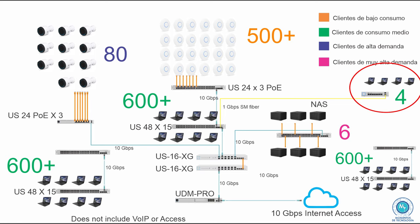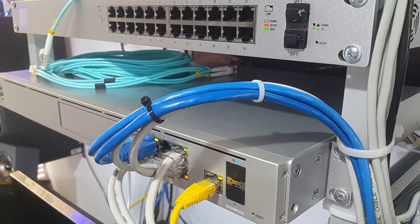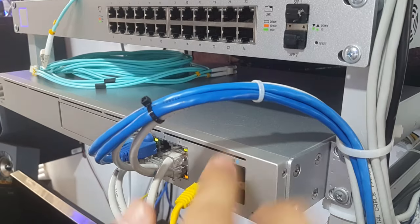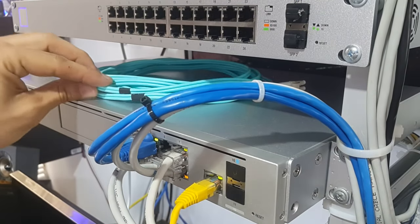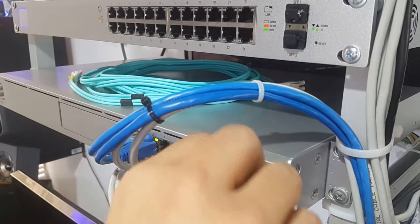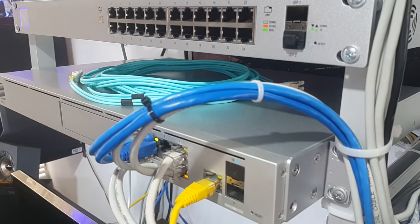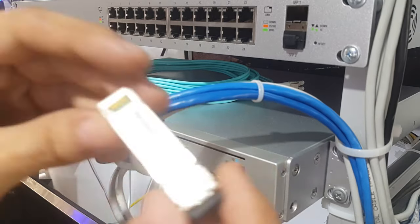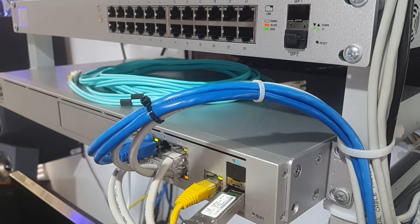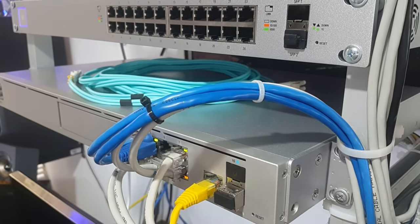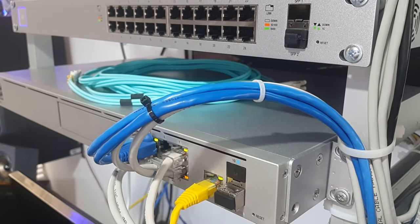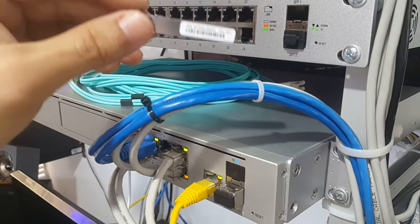UniFi aggregation switches like the US-16XG allow the use of channel aggregation technology, which we will explain in more detail later. This aggregation switch with 12 SFP+ ports and four 10 gigabit ports over copper may very well be the heart of very robust networks. All UniFi 48-port models, for example, have two SFP+ port modules — and the list continues to grow across other brands.